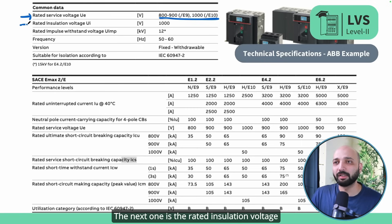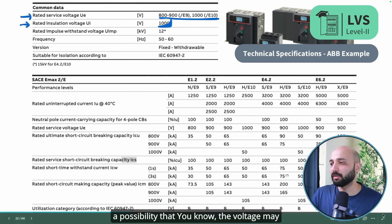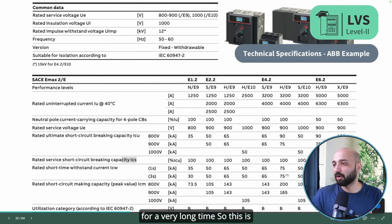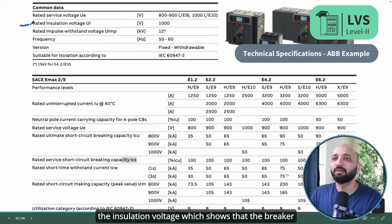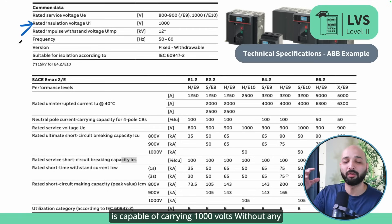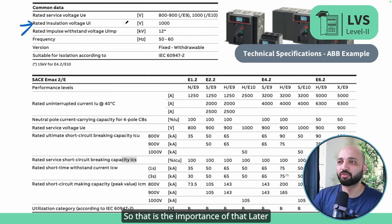The next parameter is the rated insulation voltage, Ui, which is mentioned here as 1000 volts. There is a possibility that voltage may rise in the system and stay there for a very long time. This insulation voltage shows that the breaker is capable of carrying 1000 volts without any problem in such scenarios.